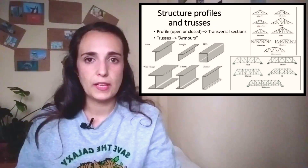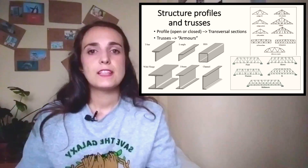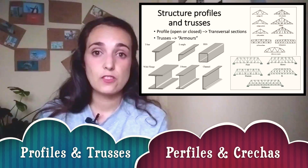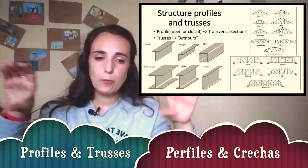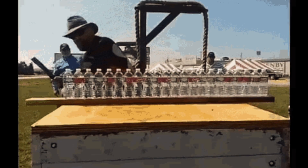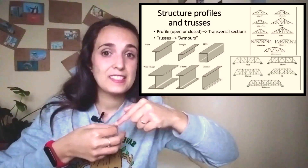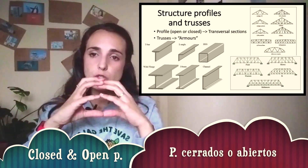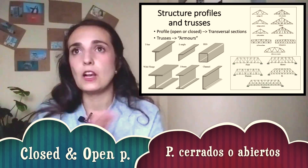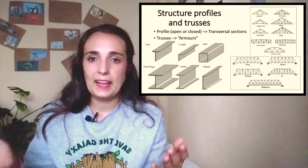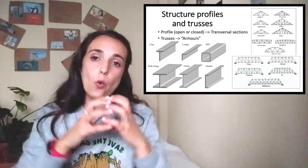In any kind of structure or element, we can use different types of profiles and trusses. Imagine we cut a beam or a column transversally — the shape of the section we find, that's the profile. We have closed profiles or open profiles, and there are lots of different shapes, like T, L, C, U, O, or square profiles.